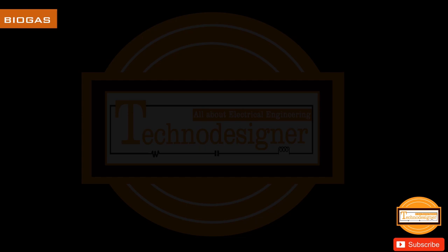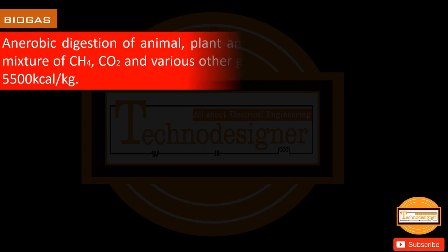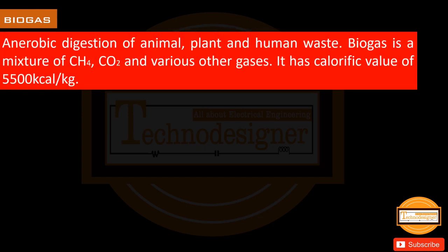Biogas: produced by anaerobic digestion of animal, plant, and human waste. Biogas is a mixture of methane, carbon dioxide, and various other gases. It has a calorific value of 5500.